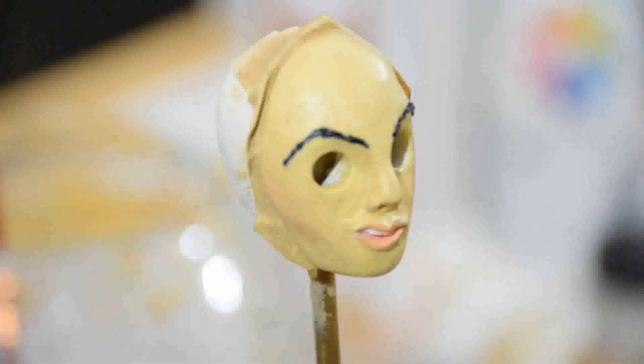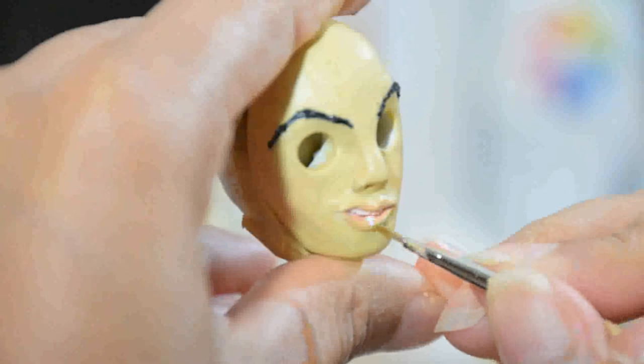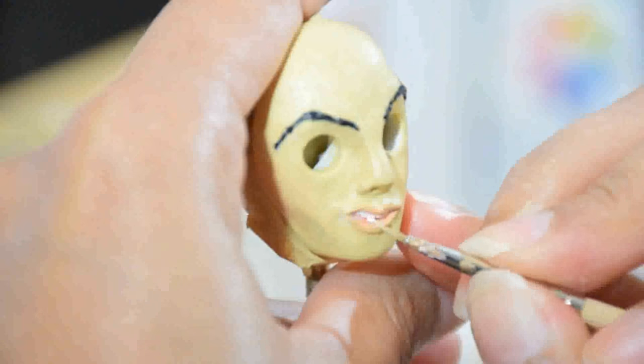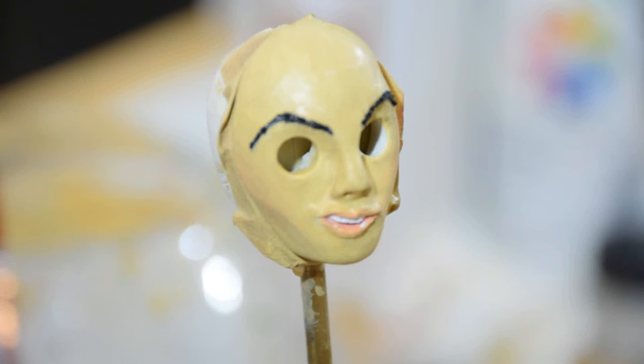You can contour the face with a light wash of burnt umber paint. And when dried, seal with matte Mod Podge glue.